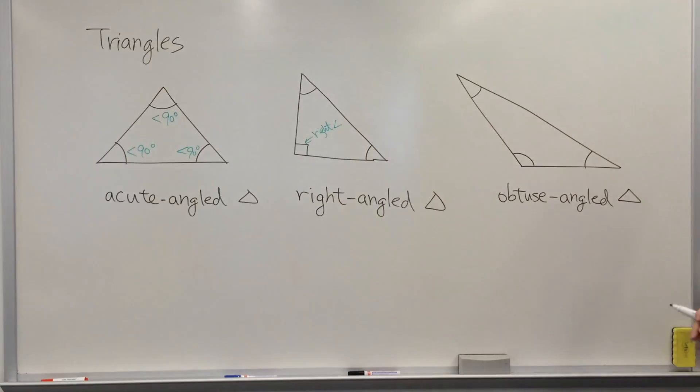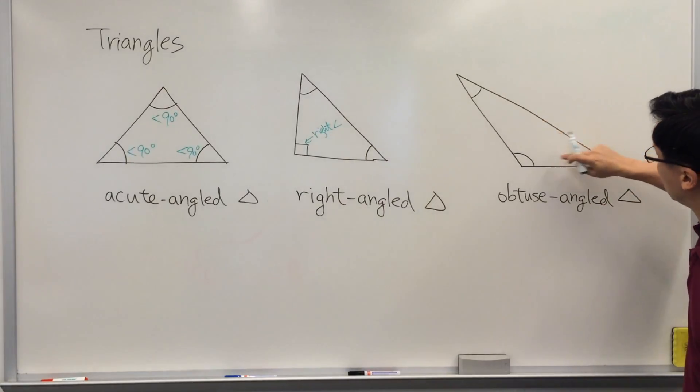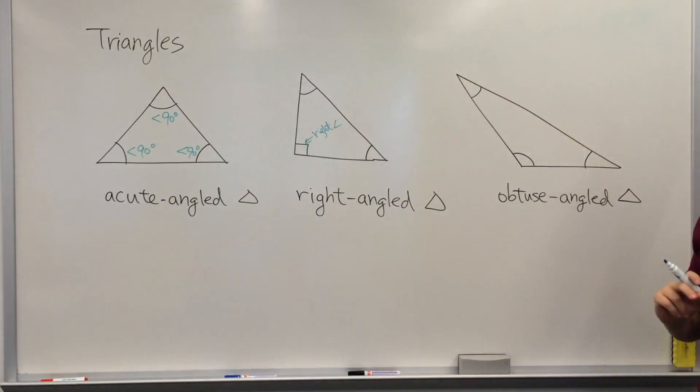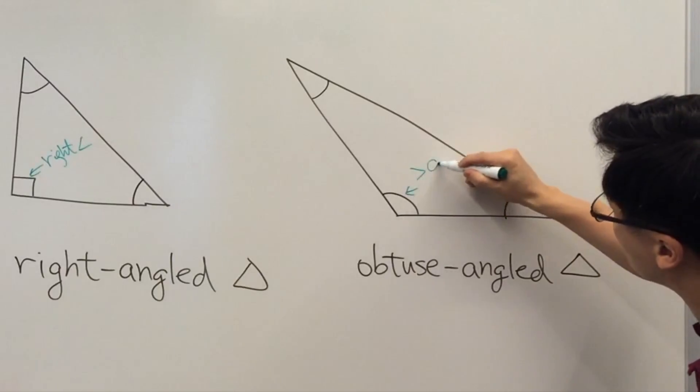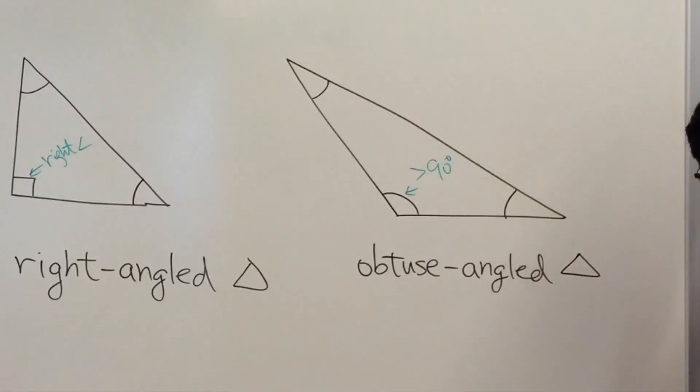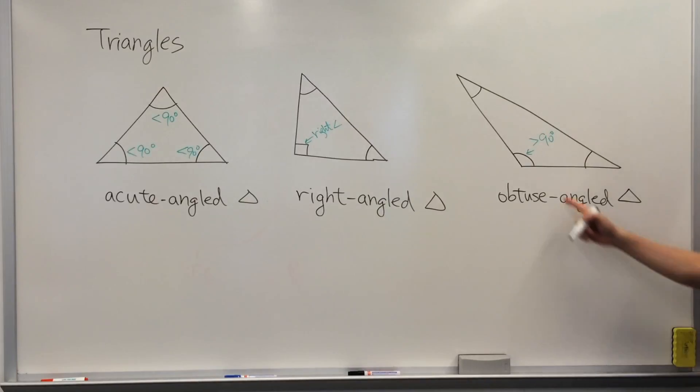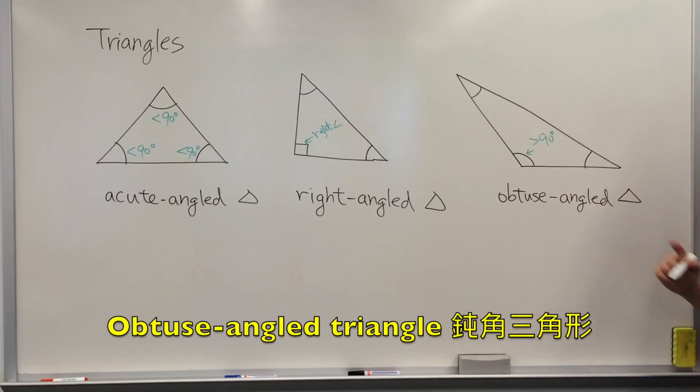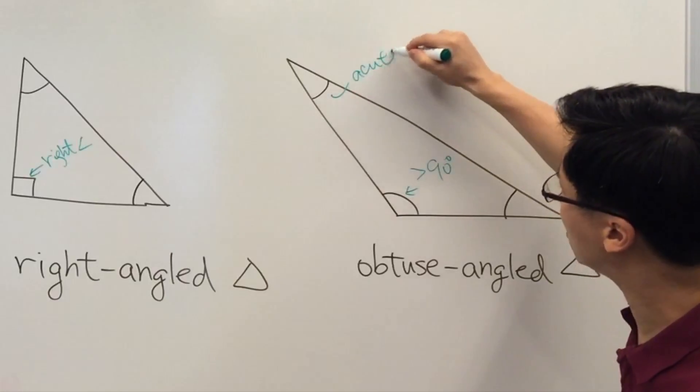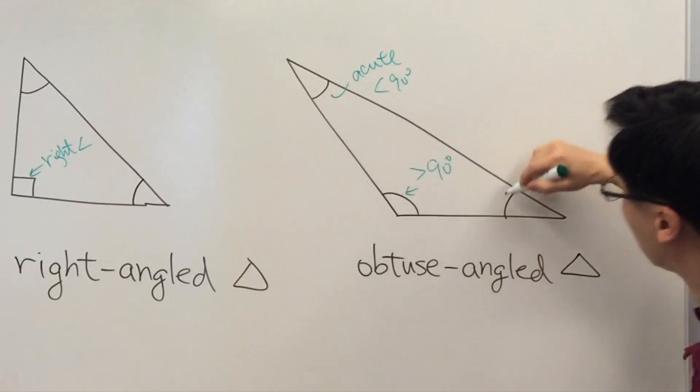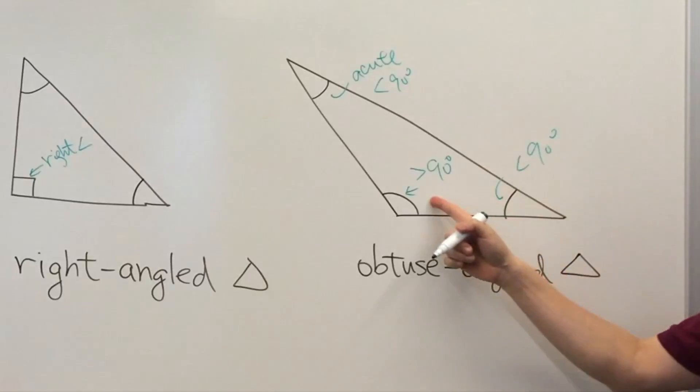The last one, this triangle, again has three angles and one of the angles is greater than 90 degrees. This is an obtuse angle and therefore it has the name obtuse-angled triangle. Even though the remaining angles are all acute angles, just one obtuse angle determines the classification.